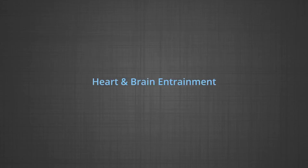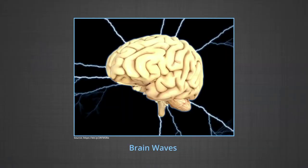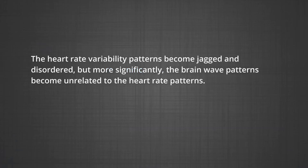Heart and brain entrainment: when a person feels content or calm, his brain wave patterns are entrained with the heart rate variability patterns. A measurable synchronicity between the heart rate and brain waves occurs — the heart, not the brain, sets the pace. When a person becomes fearful, this synchronicity is broken off; the heart rate variability patterns become jagged and disordered, and the brain wave patterns become unrelated to the heart rate patterns. When the fear is over, the brain wave patterns can again become entrained with the heart wave patterns, realizing the dopamine and adrenaline equation.